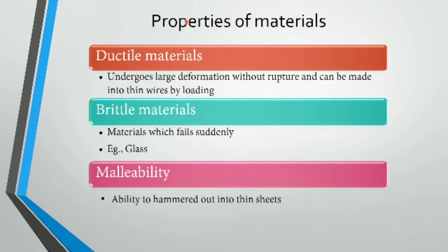The next types are ductile material, brittle material, and malleable material. Ductile materials undergo large deformation without rupture and can be made into thin wires by loading. Mild steel is an example of a ductile material.